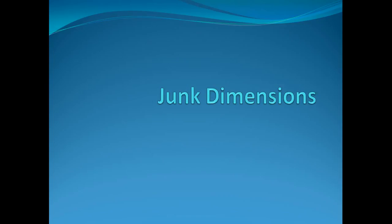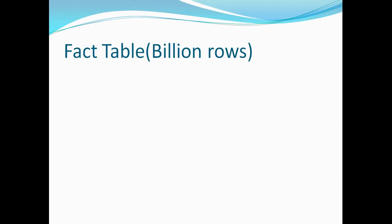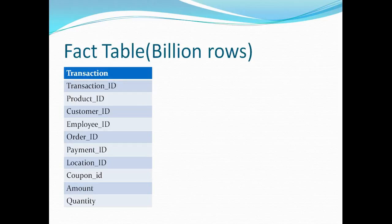We are going to understand this with the example of a fact table that has a billion rows. We are talking about a clothing line that's selling its products online and in store. Here is the snapshot of the transaction table, or the metadata, of how it looks like.